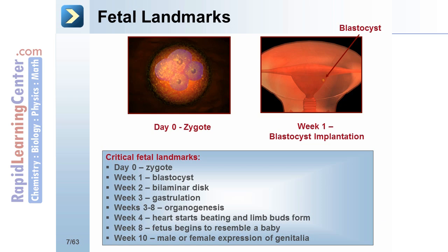In week three, gastrulation occurs, as well as formation of the primitive streak, notochord, and neural plate. In weeks three through eight, organogenesis occurs and the neural tube is formed. The fetus is extremely vulnerable to teratogens during this period.